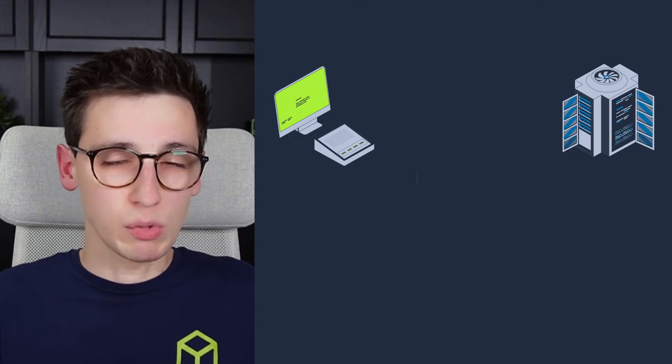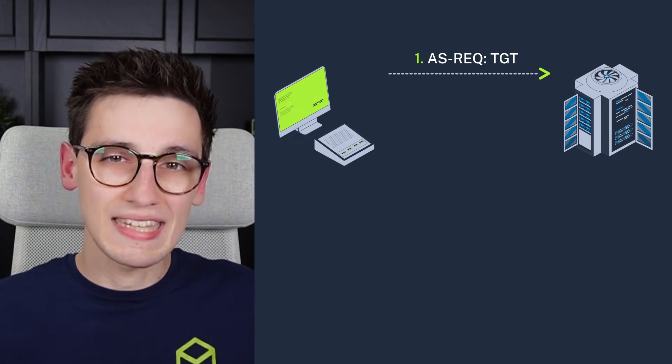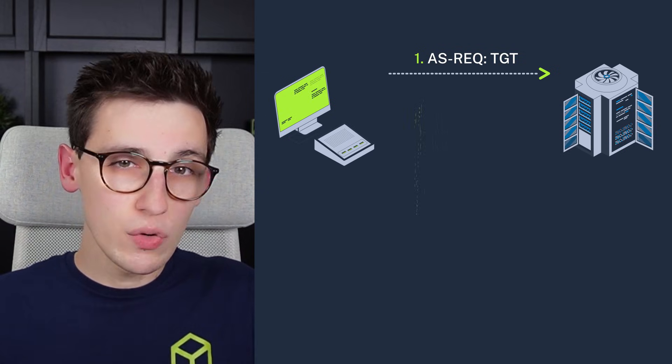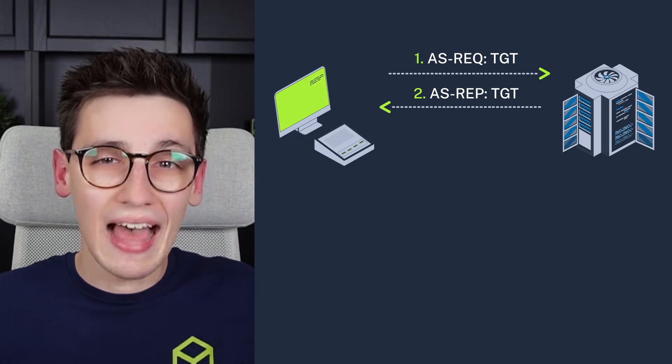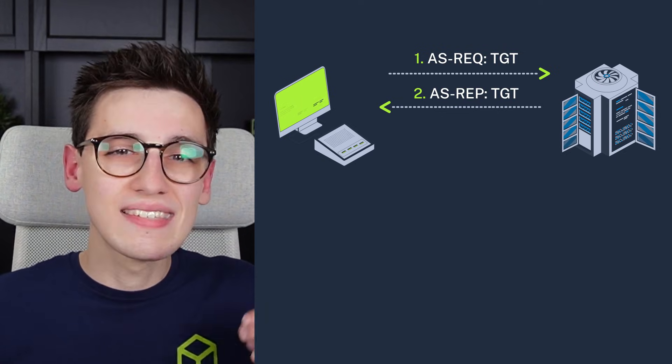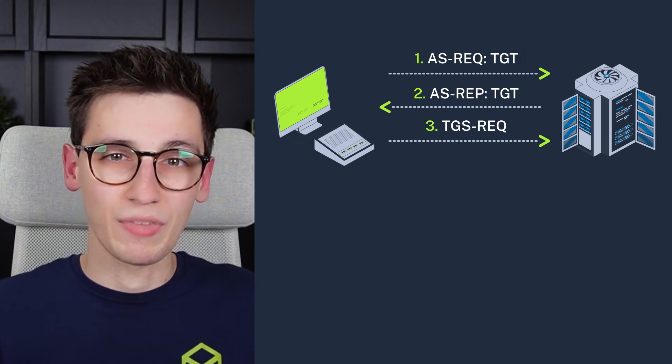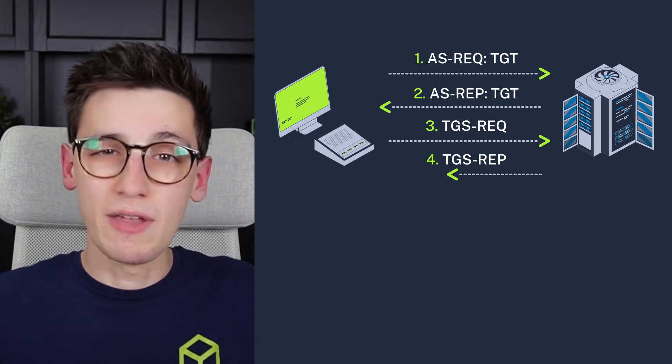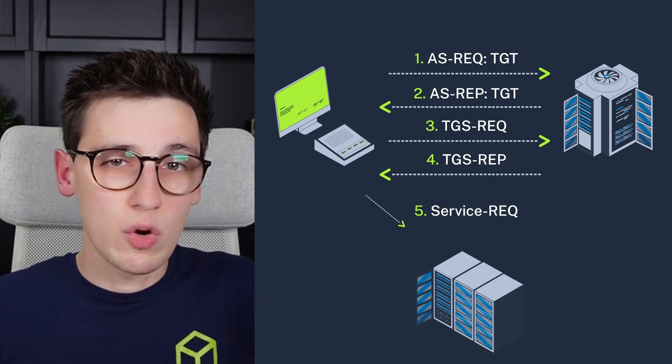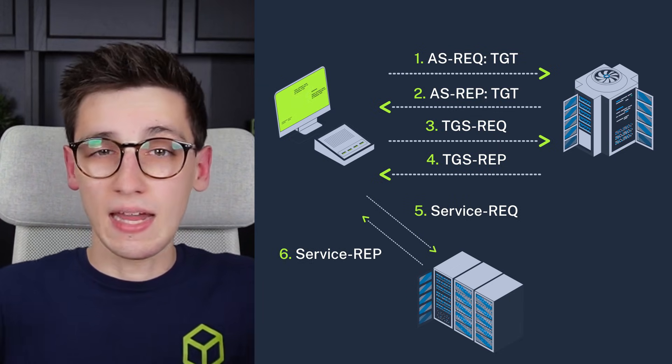The first step in Kerberoasting is requesting a TGT, or ticket granting ticket. This ticket proves that you as a user are authenticated and are allowed to request service tickets. With this ticket granting ticket you can then send a TGS request — this is you requesting the ticket booth for admission to a ride, or in AD terms, you're requesting a service ticket. This service ticket can be used to authenticate to an actual service, such as an HTTP application, MSSQL, or an SMB share. When requesting this service ticket you do it for a specific service.